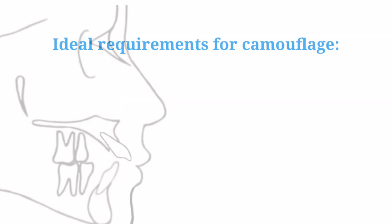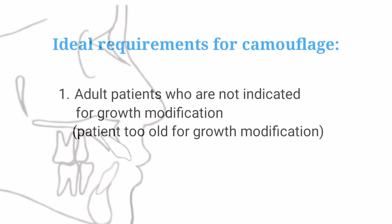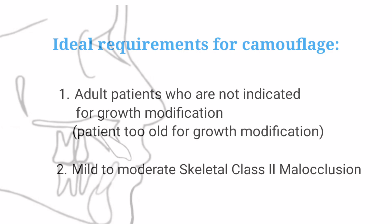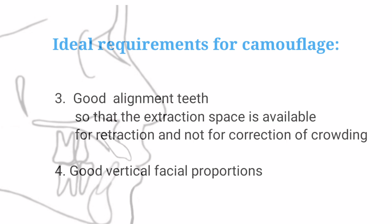Ideal requirements for camouflage: First, adult patients who are not indicated for growth modification. Mild to moderate skeletal Class II occlusion. Good alignment of teeth so that the extraction space is available for retraction and not for correction of crowding.